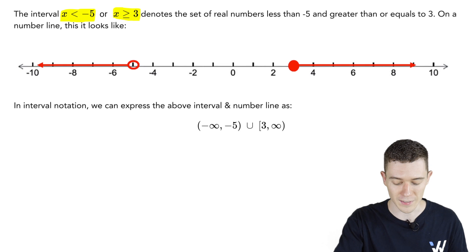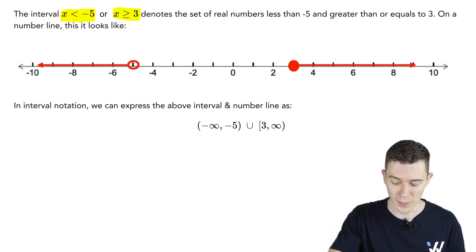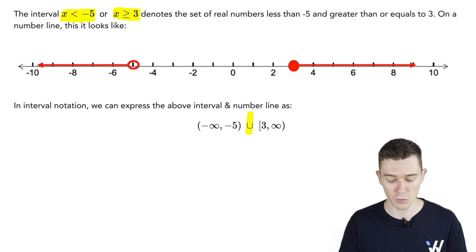It would look like this. That's minus infinity, which gets a parenthesis, because we never use brackets around infinity, up to negative 5 with a parenthesis. That negative 5 gets a parenthesis because it was an open circle on our number line. And then we have that U, U for union, so we can describe both of these at the same time.